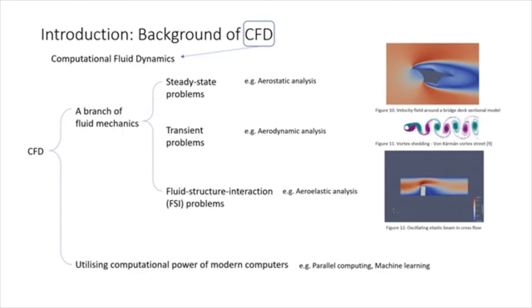And the third category is that CFD can also be used to study FSI problems, in which motion structures are coupled with the fluid flow. Figure 12 shows an elastic beam subject to uniform fluid flow. What distinguishes CFD from generalized fluid mechanics is that it utilizes computational power of modern computers. For instance, in CFD simulations, we normally use parallel computing on cluster server instead of running in serial. And there have been some attempts to incorporate machine learning into the fluid modeling.